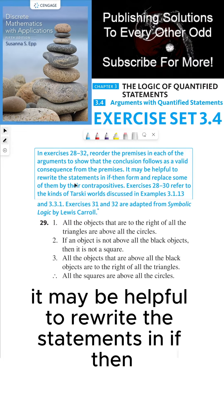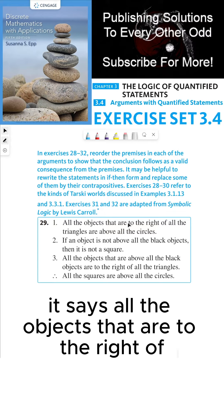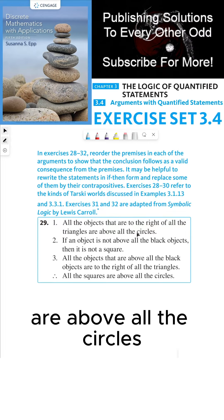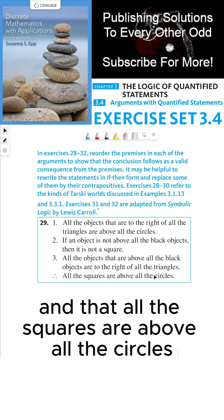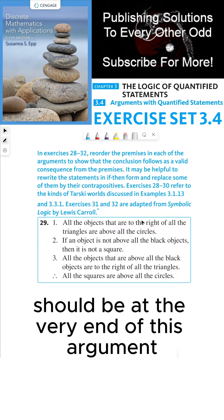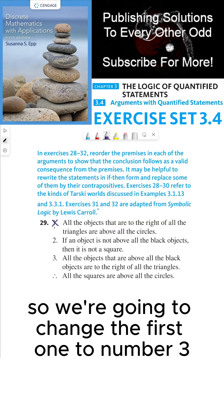The conclusion we have to validly imply with these three statements is: all the squares are above all the circles. Each of these three statements is universally quantified. The first statement says all objects that are to the right of all the triangles are above all the circles. Since we're making a claim about all the squares being above all the circles, the original statement one should move to position three in our reordered argument.